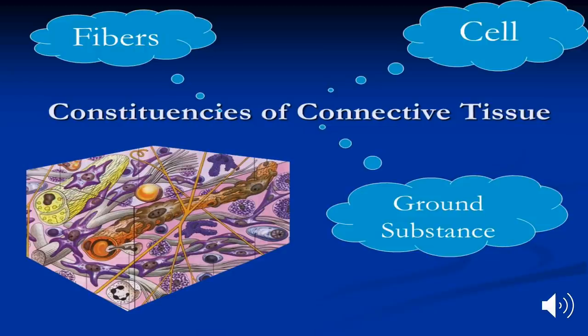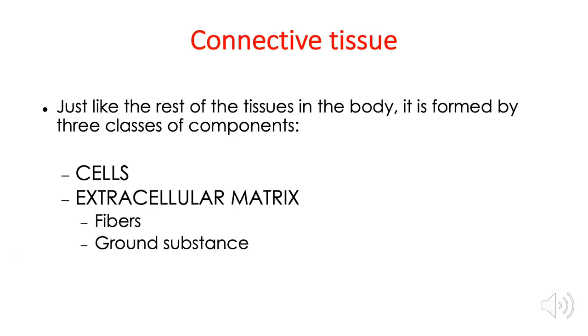Tissues are made up of groups of cells with interrelated function. But there is more to tissues than just groups of cells — you also have the extracellular matrix, which is composed of fibers and ground substances. Since connective tissue is a tissue, expect to find three components: we have the cells, the fibers, and the ground substances, which make up the extracellular matrix.